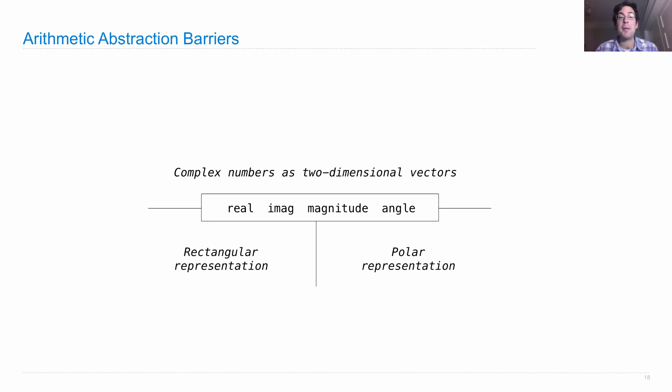With this set of four messages, now we have an abstraction layer where complex numbers are two-dimensional vectors, which means they have all these properties at the same time. We can use them as we want.